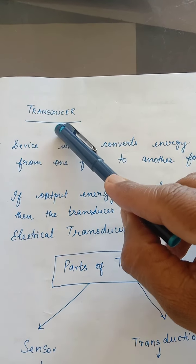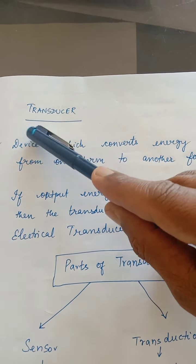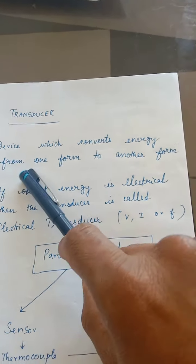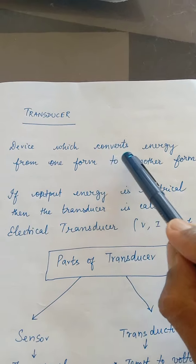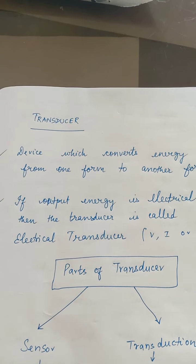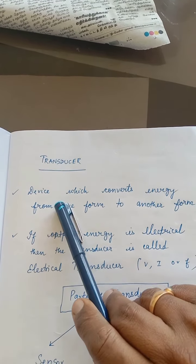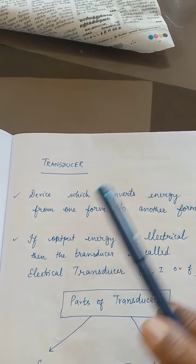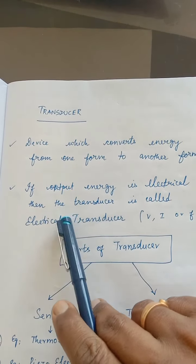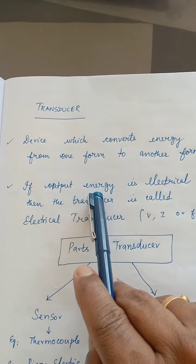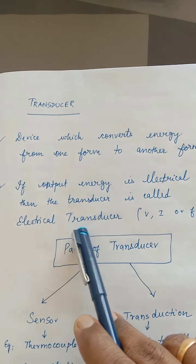Next, let's talk about transducers. What is a transducer? This is a device that generally converts energy from one form to another form. The transducer converts a physical quantity from one form of energy to another form. An electrical transducer is one where the output energy is electrical — it is called an electrical transducer. For example, the output may be voltage, current, or frequency.